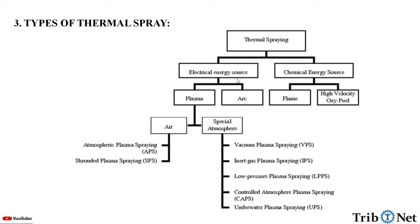They are classified into electrical energy source and chemical energy source. In the electrical energy source, the medium is plasma or arc. In plasma, the atmosphere can be air or special atmosphere. In case of air, that is atmospheric plasma spraying and shrouded plasma spraying. In special atmosphere, that includes vacuum plasma spraying, inert gas plasma spraying, low pressure plasma spraying, controlled atmosphere plasma spraying, and underwater plasma spraying.